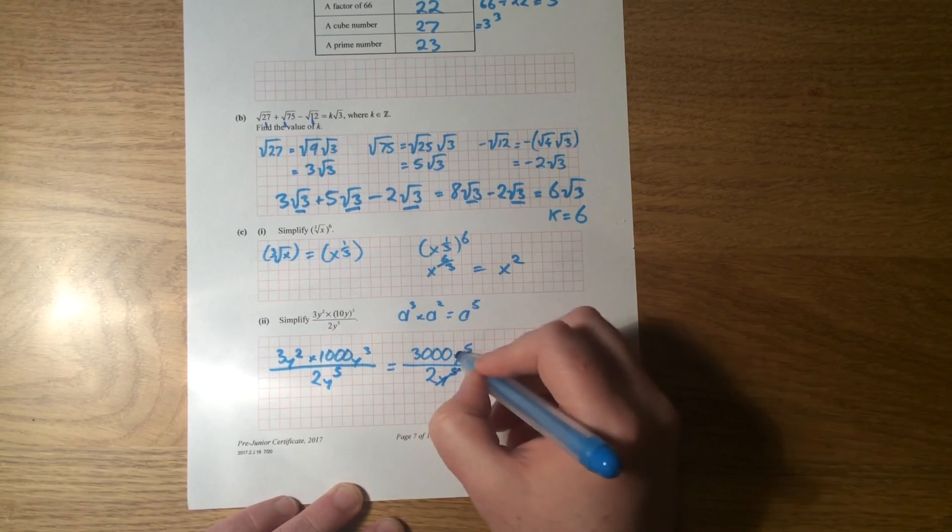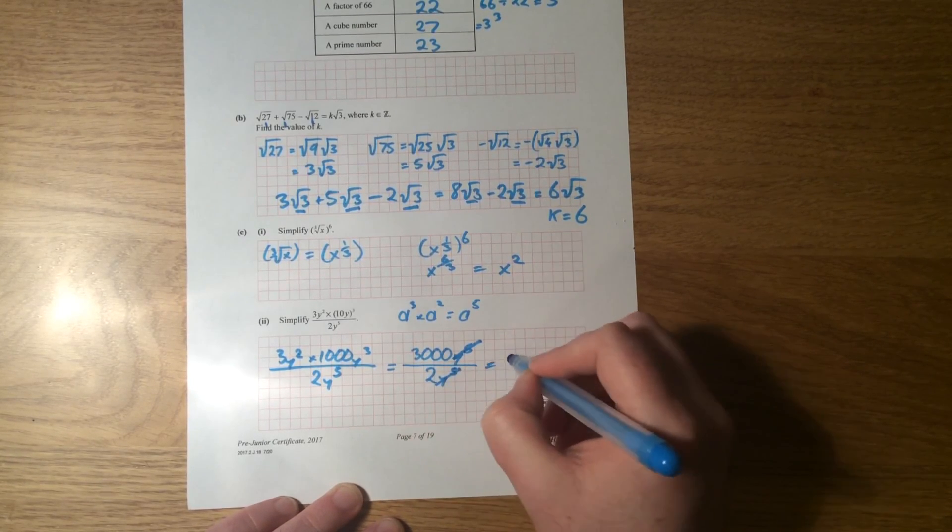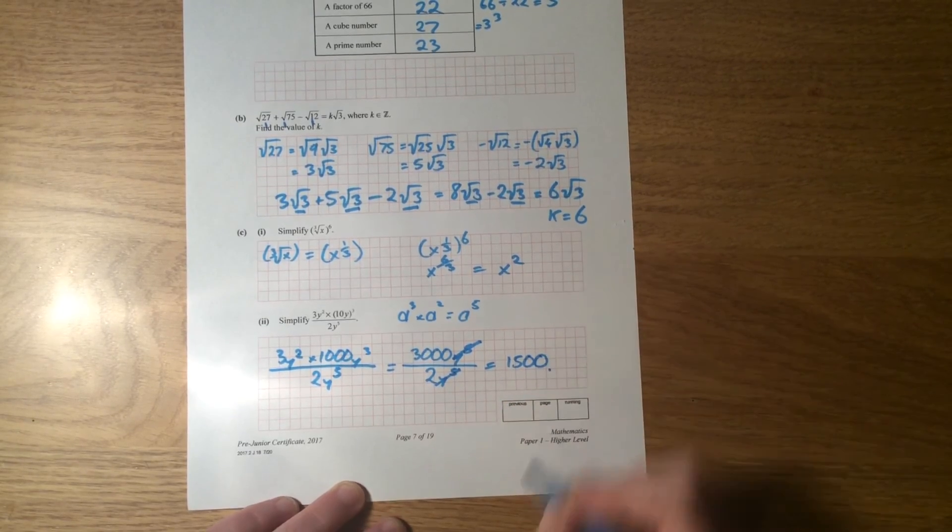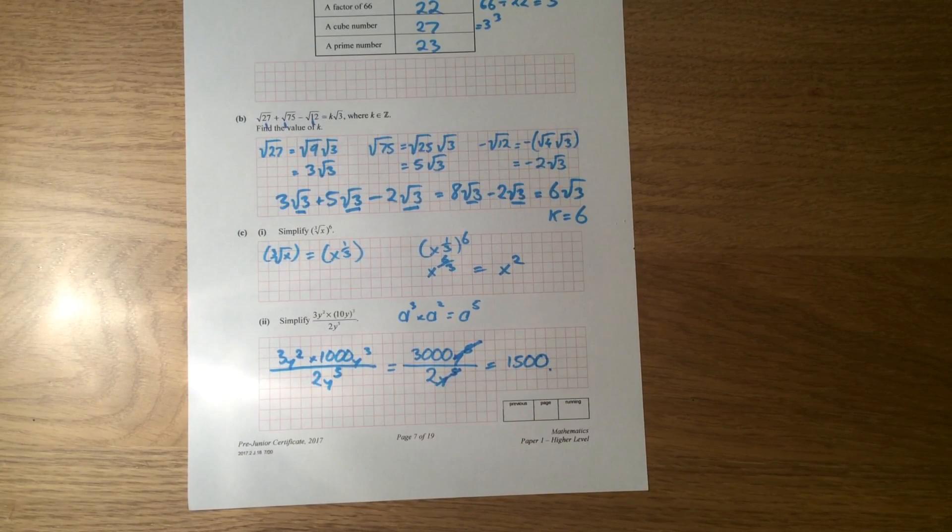And y to the power of 5 divides into each other, it's cancelled, and 3,000 divided by 2 is 1,500. And that's your answer there. And that's the end of question 4.